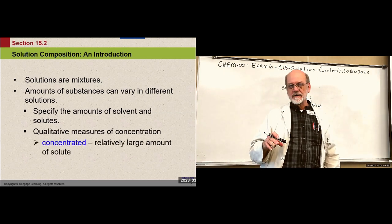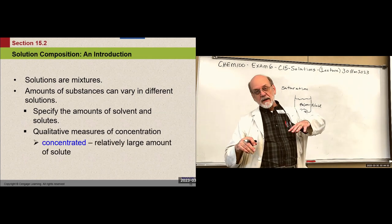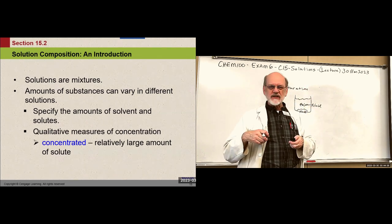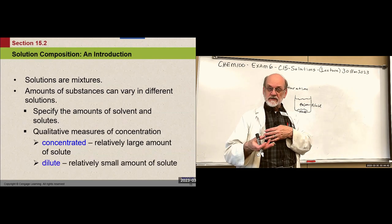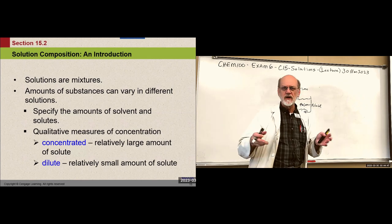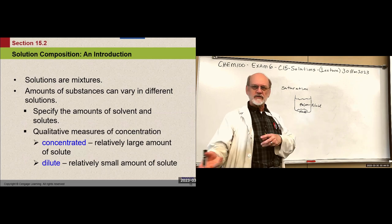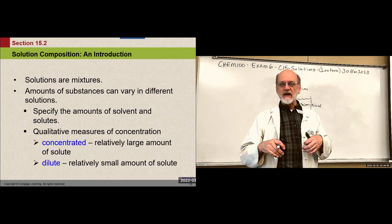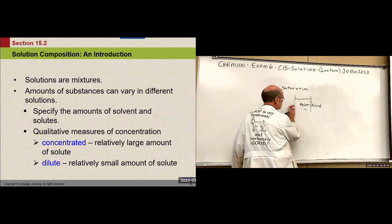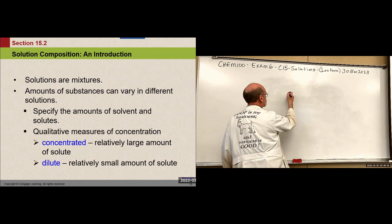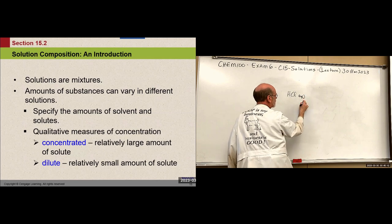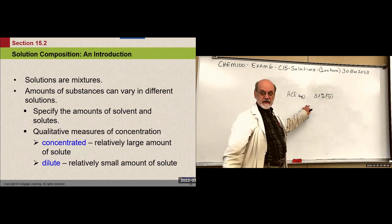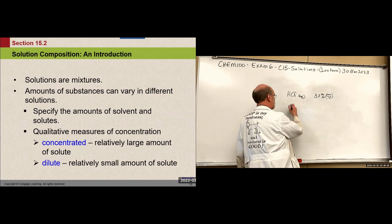You can do it qualitatively: if the solution is very concentrated — the amount of solute is approaching saturation but not quite there yet — you can say it's concentrated. If there's just a tiny amount of solute, we say it's dilute. We use those expressions all the time in the laboratory: concentrated versus dilute. For example, concentrated hydrochloric acid could be 37% mass volume.